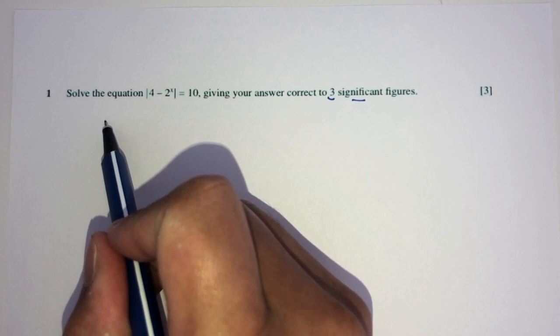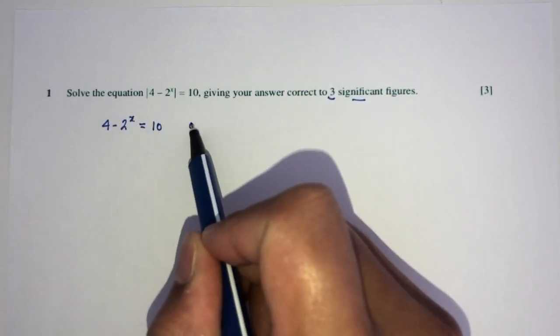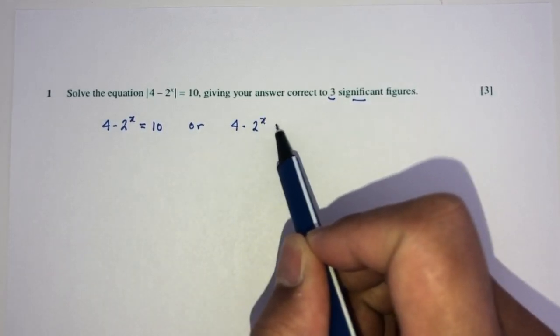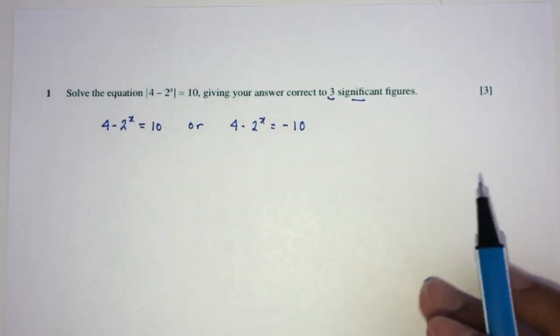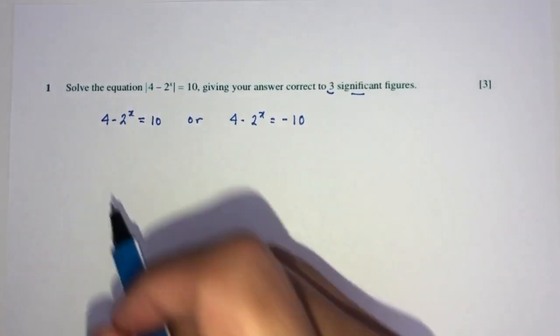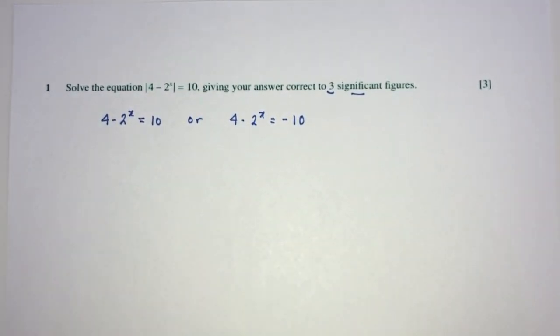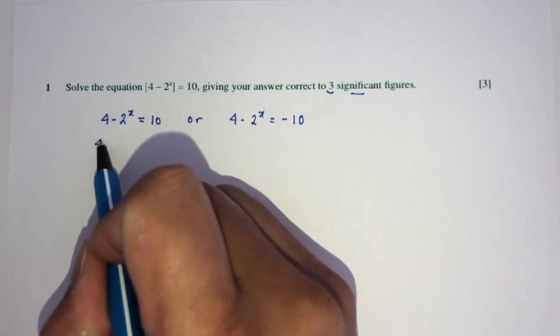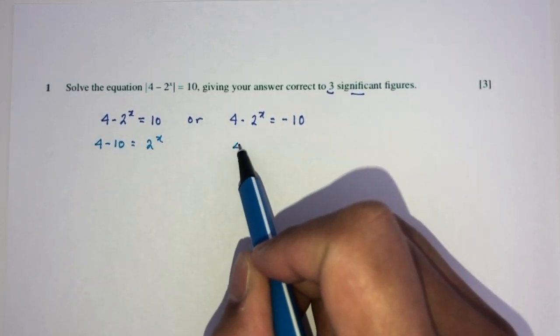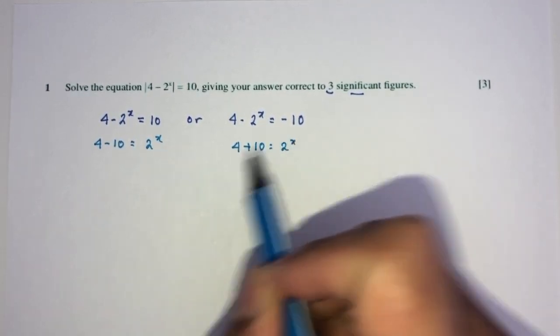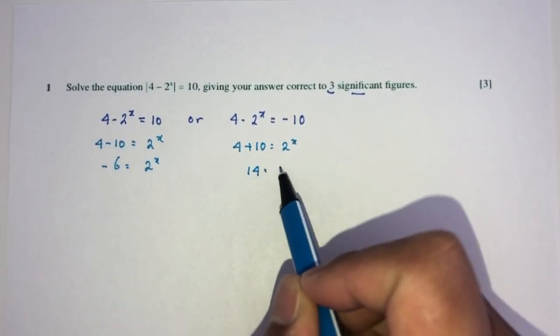How can you break this down? That will be 4 minus 2 power of x equals 10, or 4 minus 2 power of x equals minus 10. This is the way to cancel out the modulus on one side. Now we can solve step by step. Send this over here and this over here because the goal is to make x the subject. 4 minus 10 equals 2 power of x. Here you will have 4 plus 10 equals 2 power of x. Simplified, minus 6 equals 2 power of x, and 14 equals 2 power of x.